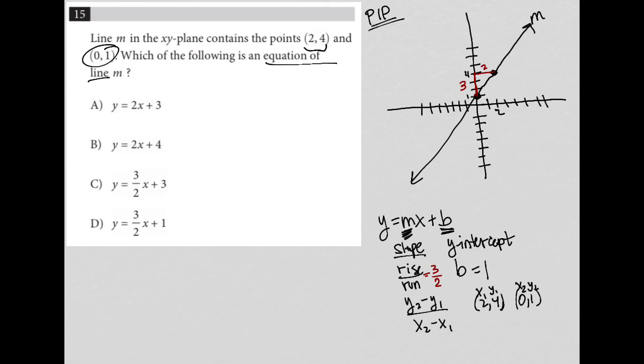All right. So now I know that m is equal to 3 over 2 and b is equal to 1. So all I have left to do is plug those into my equation. So I have y equals 3 halves x plus 1, and therefore the answer is choice D.